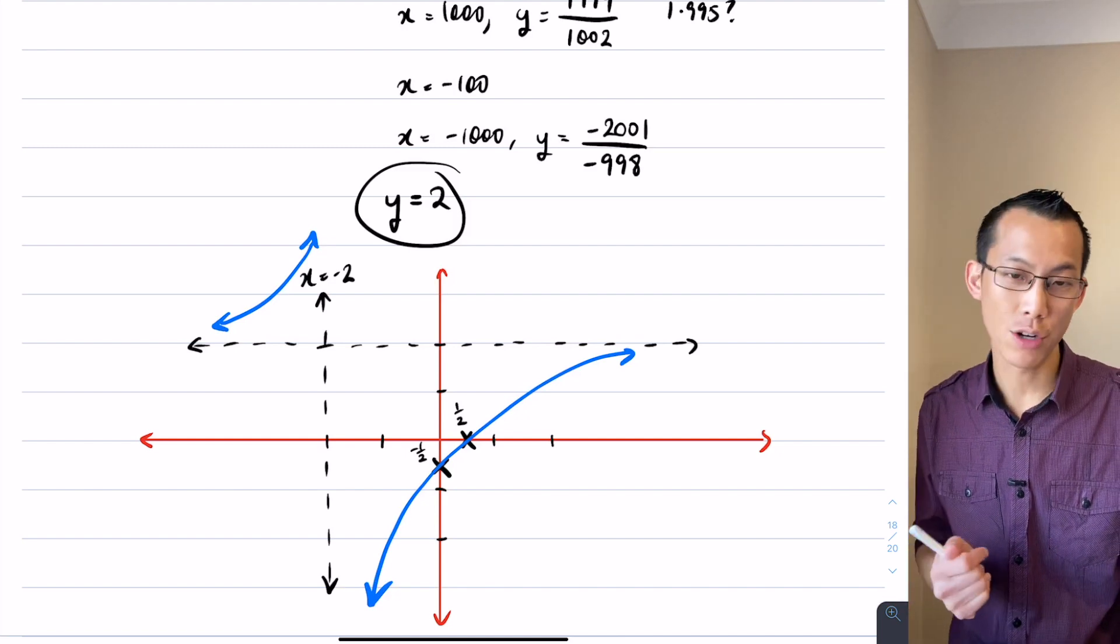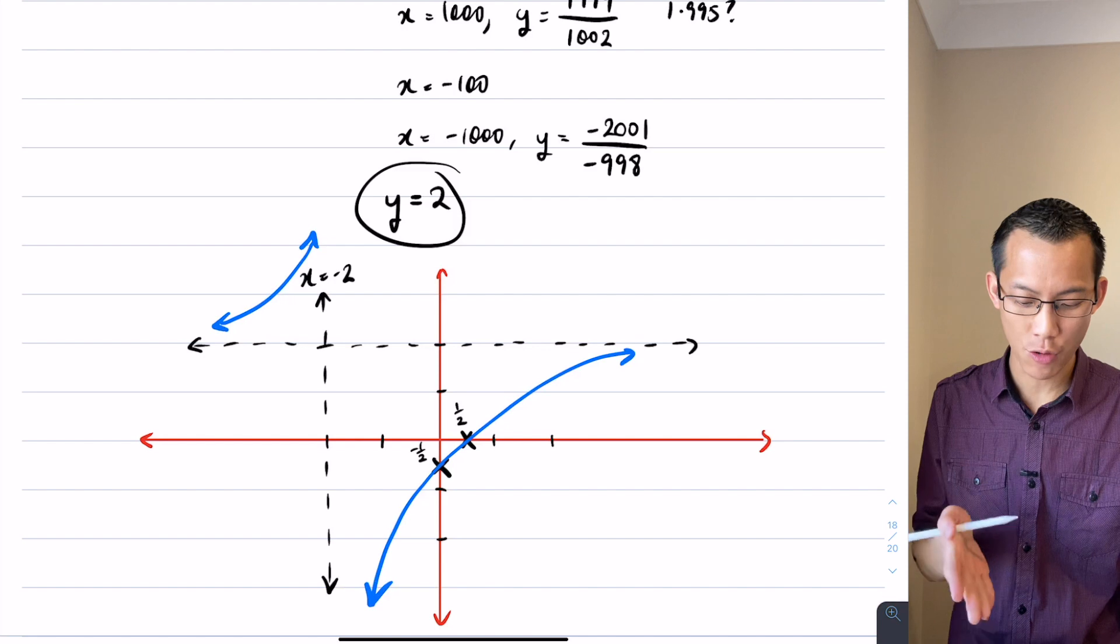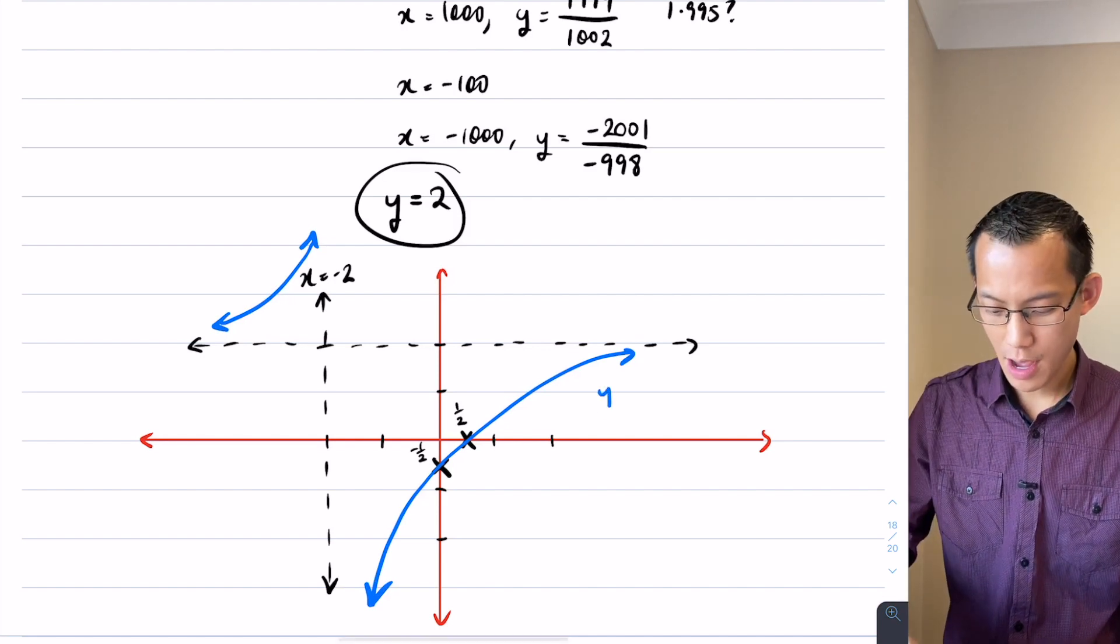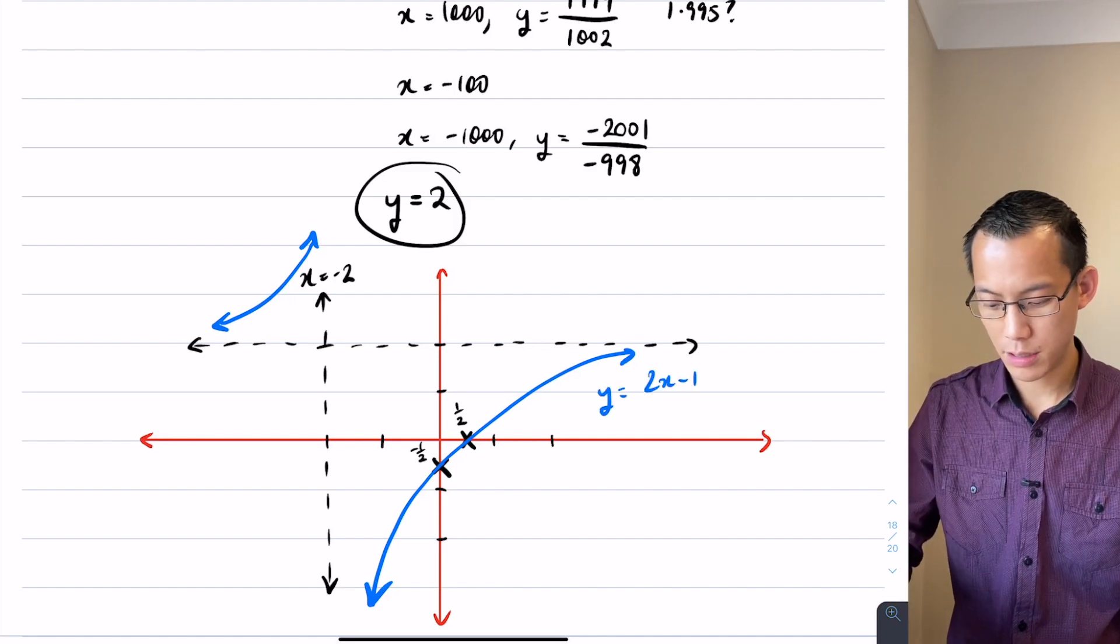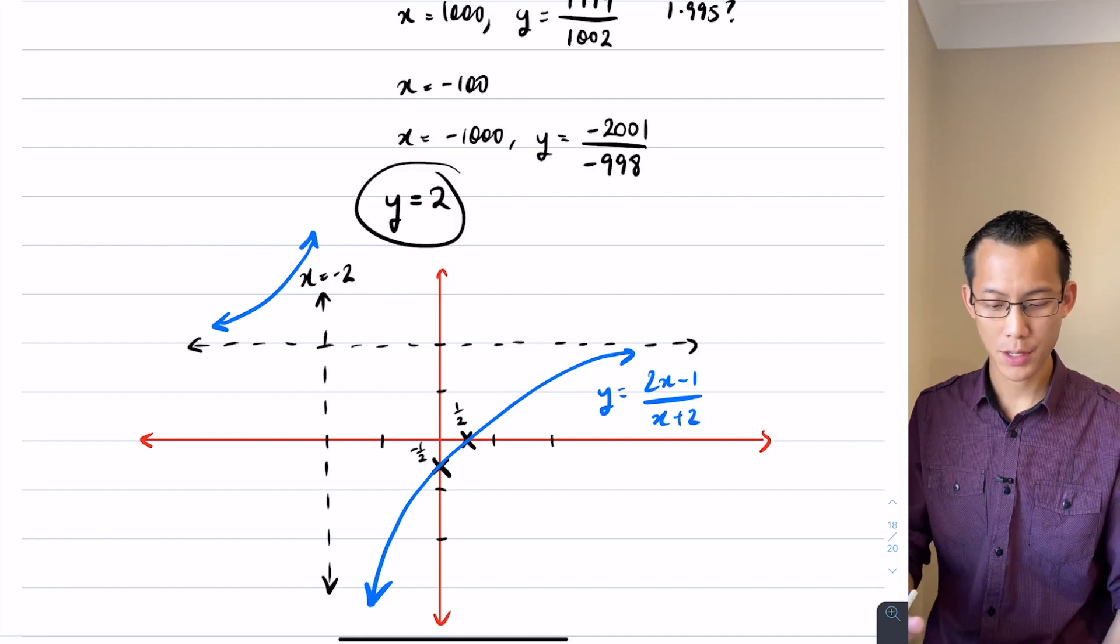Do I need a point for scale? I don't here, because I have enough intercepts that tell me this is unambiguously y equals 2x minus 1 over x plus 2. Okay.